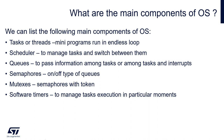A special version of the queue is a semaphore. We can call it a queue with one component of type on-off. It can be used between tasks or between a task and an interrupt.